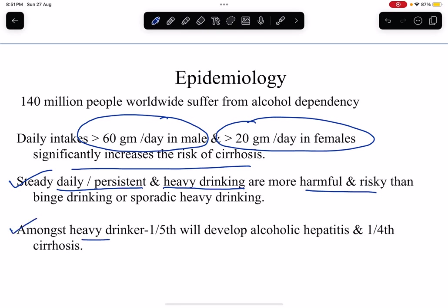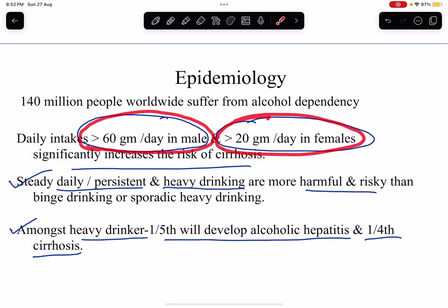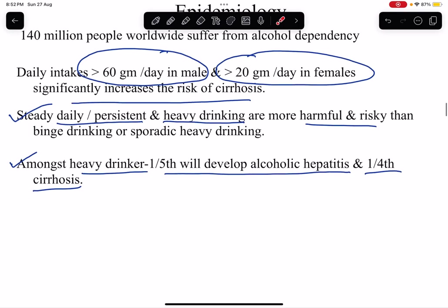Among heavy drinkers, one-fifth will develop alcoholic hepatitis and one-fourth will develop liver cirrhosis. Cirrhosis is the endpoint after which people develop different complications. We need to remember the significant amount of alcohol intake: more than 60 grams per day in a male and more than 20 grams per day in a female to cause liver cirrhosis.